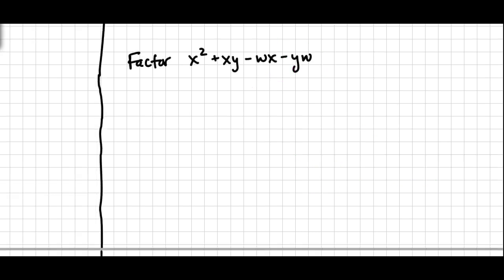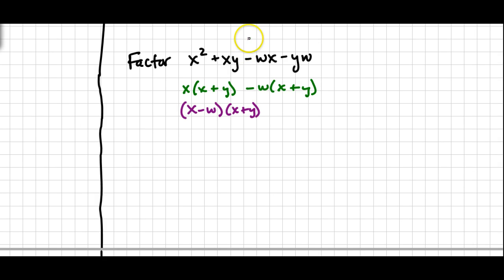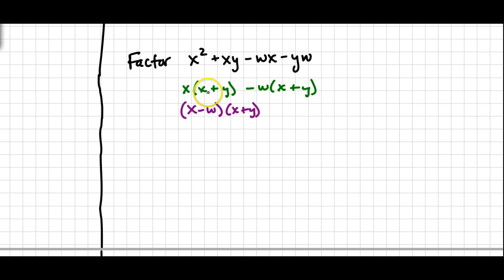Try one now — pause the video and then the answer will appear. You would cut it in half and pull out a GCF for each pair. The GCF for the first two terms is x, leaving x plus y inside. The GCF for the last two is negative w, because that's common to both, leaving another x plus y inside. Pulling out x plus y from both terms, you're left with x minus w — those are your two factors.